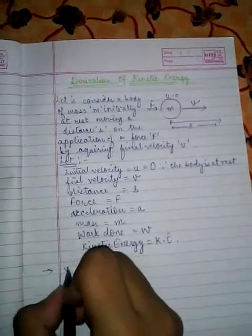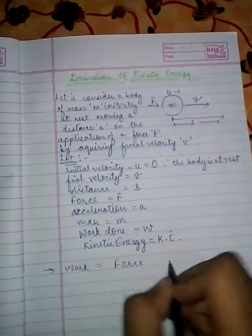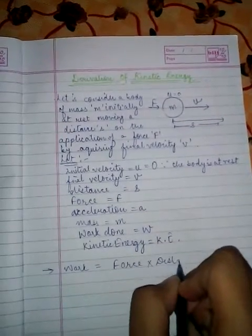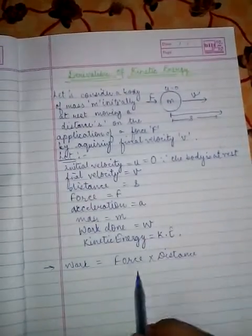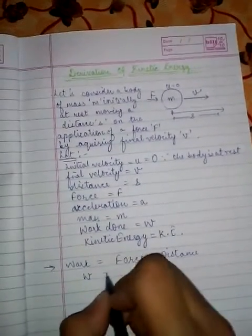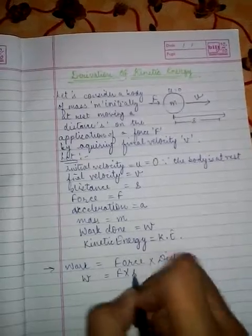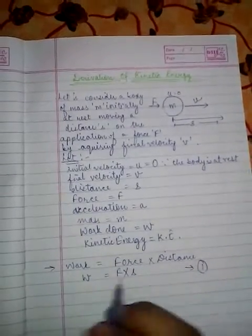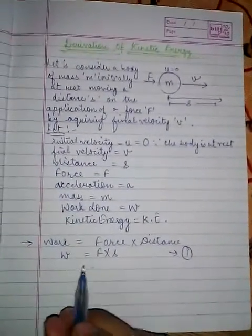We have a formula for work that is work is force multiplied by the distance. Now we would be putting the variables in this formula. We would be having W = F × S, this being our first equation of this derivation.